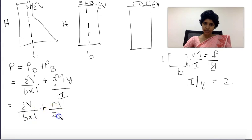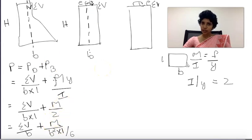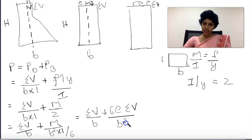Using section modulus z, which equals i by y, we get stress equals sigma V by b plus or minus m by z. For a rectangular section, z equals b squared by 6, giving us sigma V by b times 1 plus or minus 6e by b.